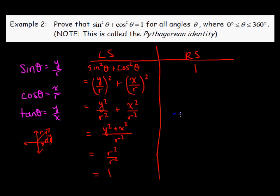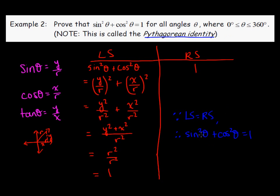Since left side equals right side in our check, therefore we know that the original statement — sine squared theta plus cosine squared theta equals 1 — is true. This is often referred to as the Pythagorean identity, because we've got something squared plus something squared equal to 1, which is something squared, and you can see how that might be called the Pythagorean identity.